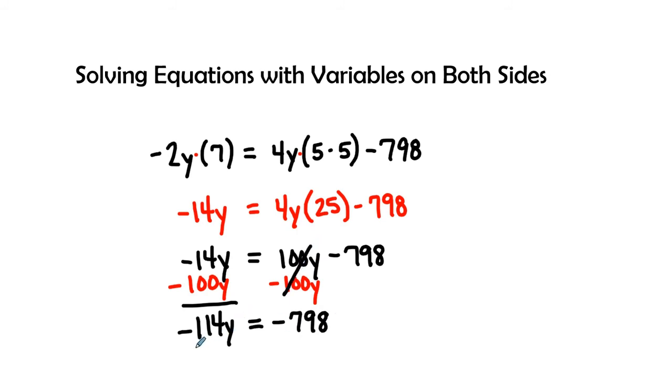We're going to divide by our coefficient of a negative 114. We might not know exactly what this answer is, but we know that y is going to be by itself because these two become 1. And then a negative 798 divided by a negative 114. You could do it on the calculator ahead of time, or you could do long division, but the answer is 7.